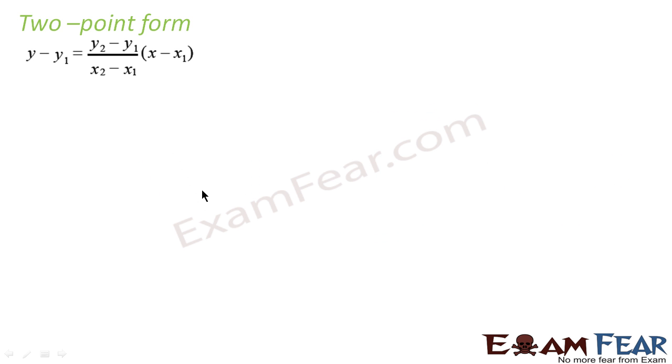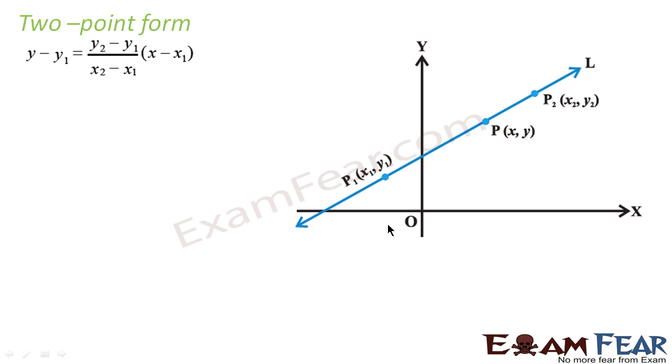Now I will explain two-point form. In two-point form, the slopes are not given but any two points on the line are given. For example, here P1 and P2, these points are given and we have to find the equation.